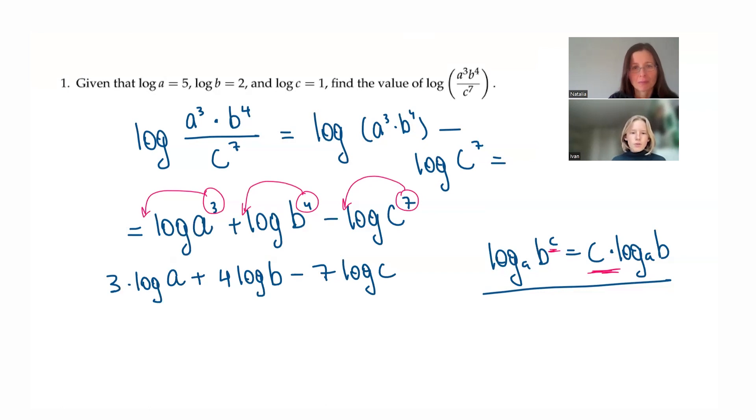Now, because we were given log C, log B, and log A, we just plug them in into our equation. And we have three times log A, which is three times five. And we have four times log B, which is four times two. And minus seven times log C, which is seven times one. So we have 15 plus eight minus seven. 15, eight, seven, which is how much altogether?